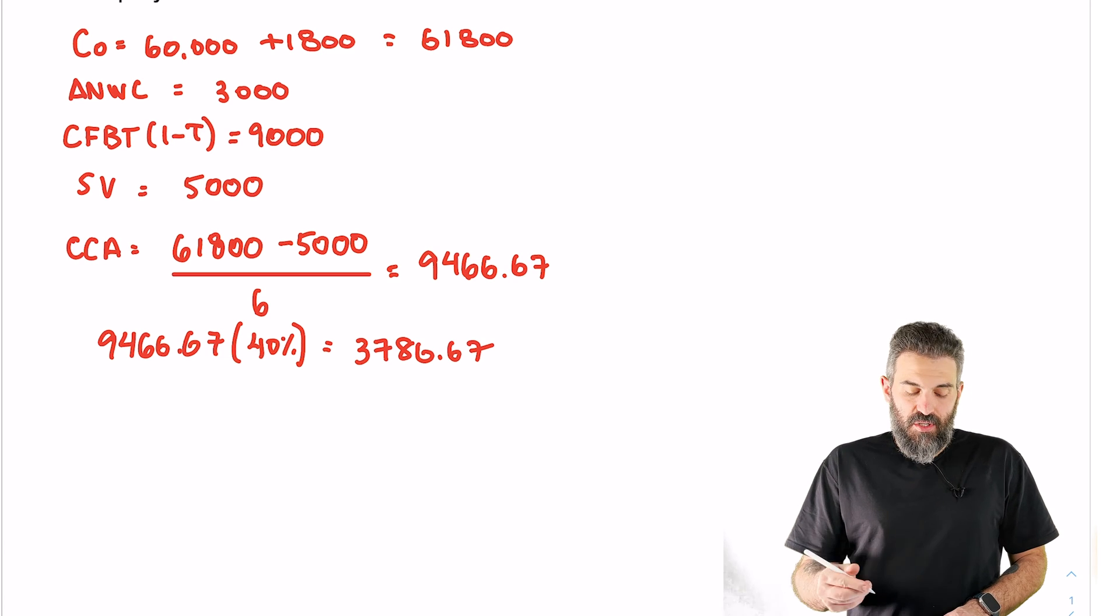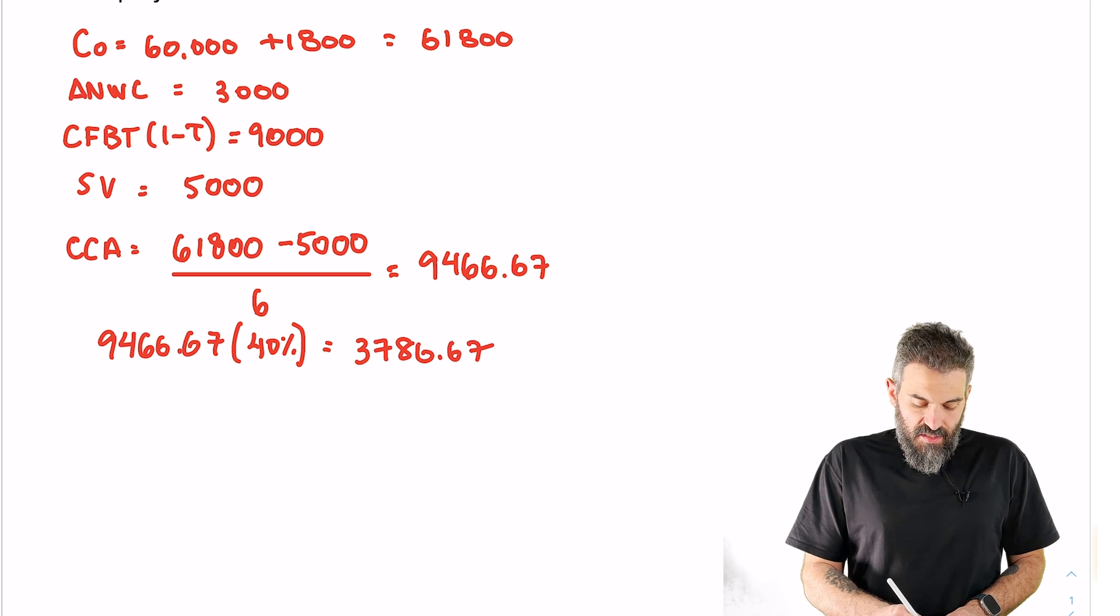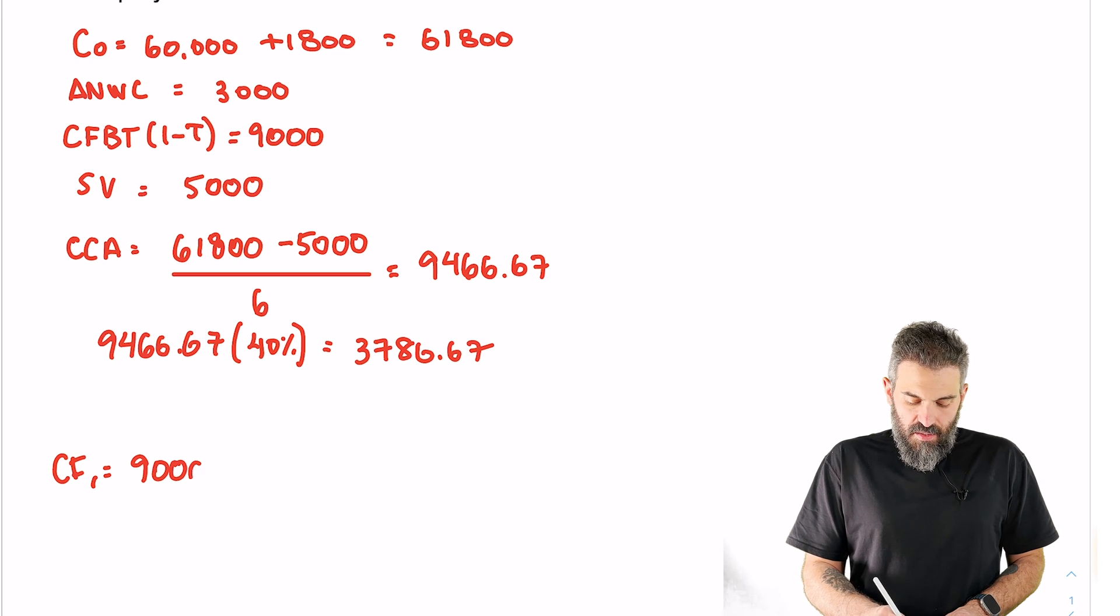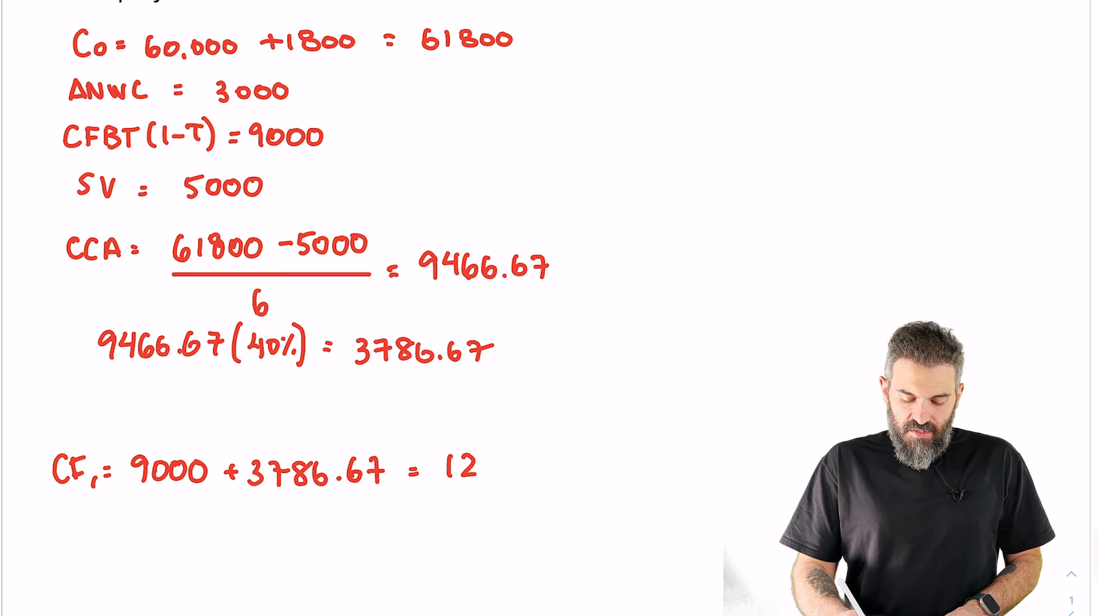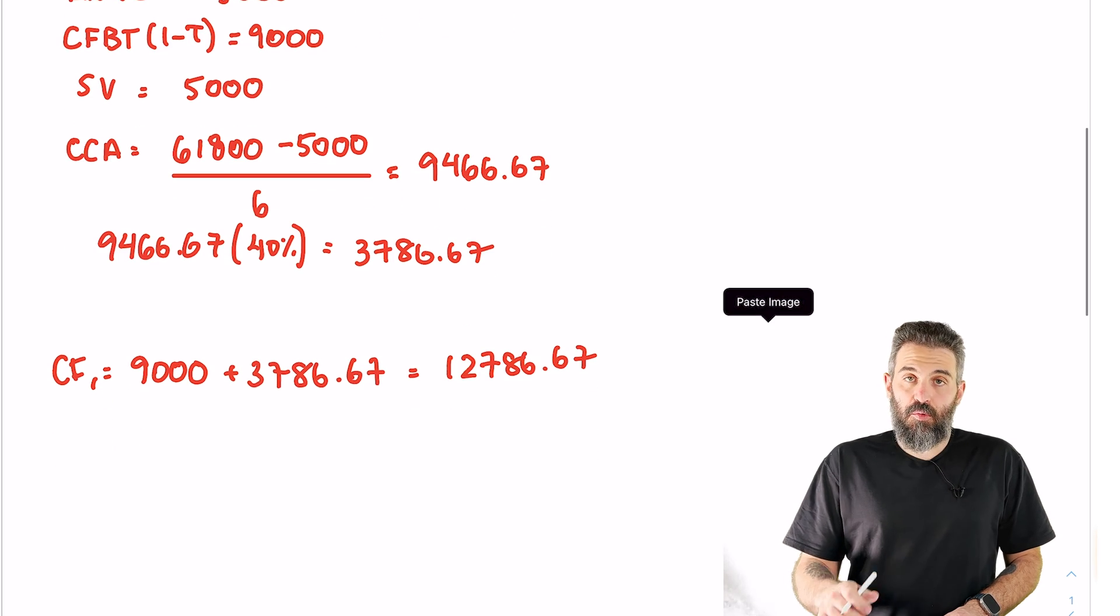Okay, now time to put it all together. The first thing is going to be to find the present value of the annual cash flows. Now since we know that our operating cash flow is $9,000 and the tax shield is $3,786.67, the annual cash flow is $12,786.67 and it'll be the same every year.